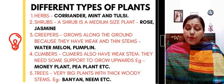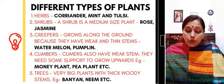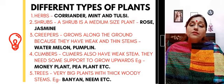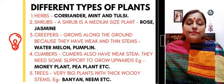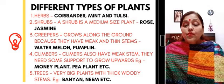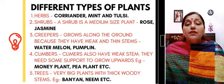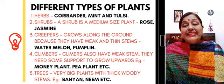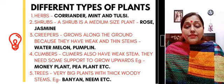Next are climbers. Climbers also have weak stems and need support to grow upwards — for example, money plant, grapevine, pea plant, etc. Now come trees. Very big plants are known as trees. They have a thick, woody trunk. Some examples of trees are banyan, neem, peepal, etc.